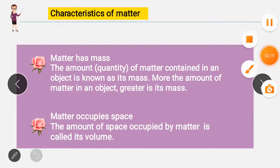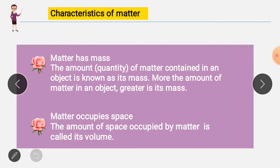The first characteristic of matter is that it has mass. The definition of mass: the amount or quantity of matter contained in an object is known as its mass. The more the amount of matter in any object, the greater is its mass. For example, the body of an elephant has a greater amount of matter than that of a monkey.